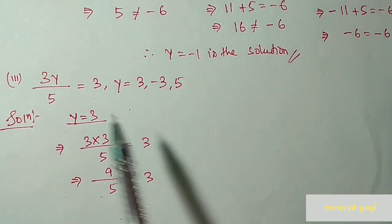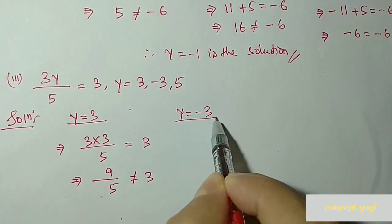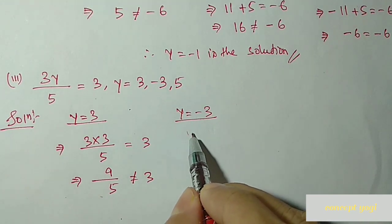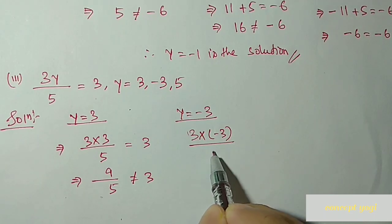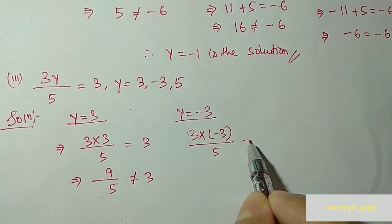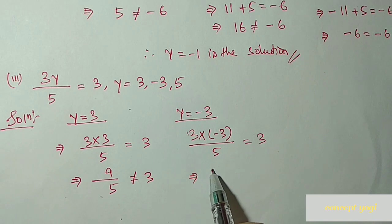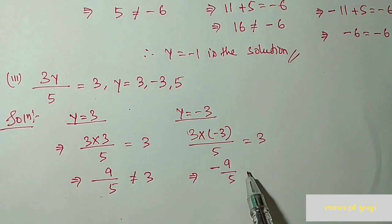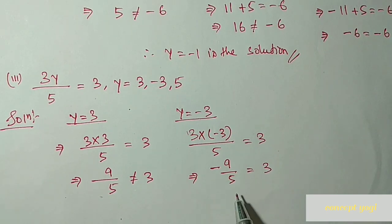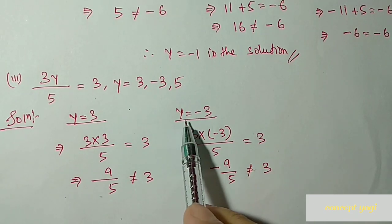Next we put y equal to minus 3: 3 into minus 3 divided by 5 equal to 3. Minus into plus gives minus, so 3 into minus 3 is minus 9. We get minus 9 by 5 on the left side — not equal to 3 on the right side. So y equal to minus 3 is not the solution.